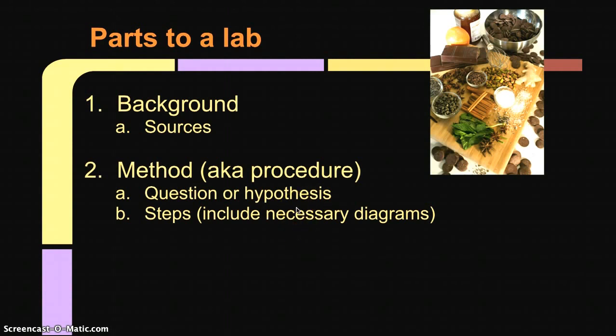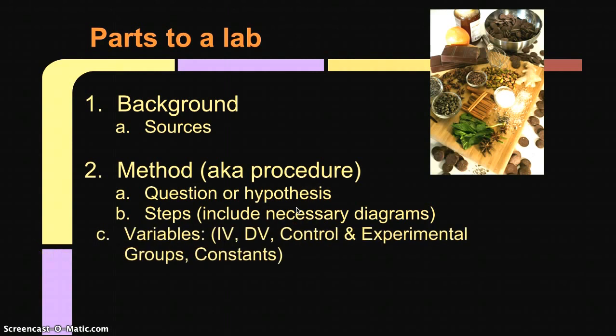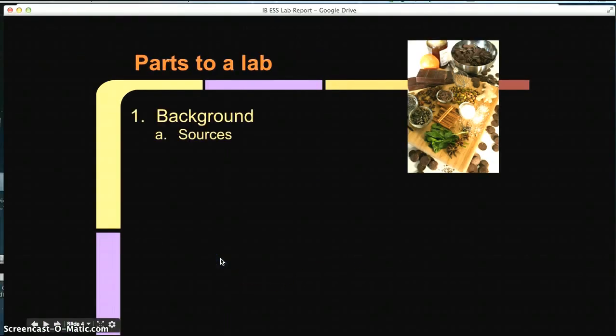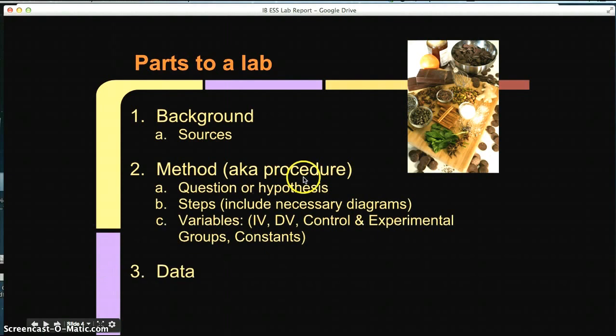If you just say, see diagram one, see figure two. The other step of your method needs to be an identification of the variables. I suggest making a table and talk about the independent variable, the dependent variable, the control and experimental groups, and any control variables that you had to hold constant.